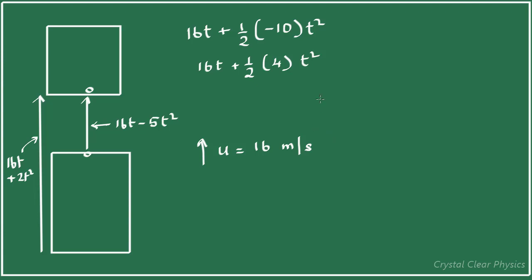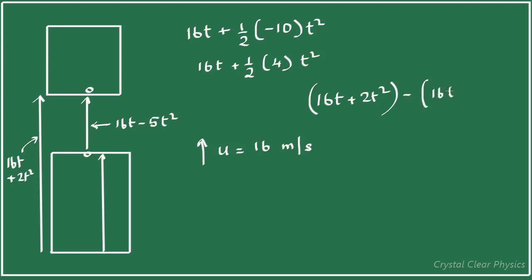Looking at the diagram, you can see very clearly that 16t plus 2t² — from the floor of the elevator at the initial time to the floor at the final time — minus the displacement of the bulb gives us the height of the elevator, which is 4 meters. So displacement of the elevator minus displacement of the bulb: 16t minus 16t cancels, and we have 2t² plus 5t² equals 7t² equal to 4. So the time is the square root of 4/7 seconds.